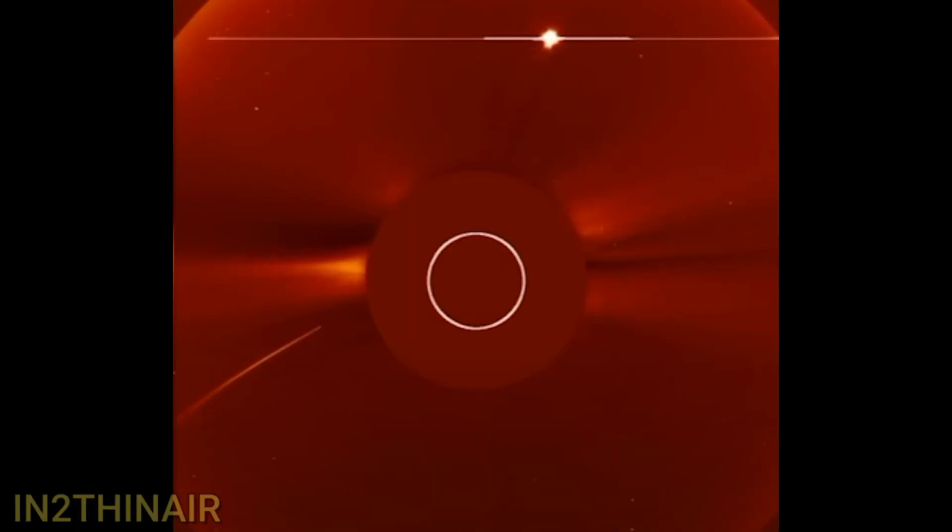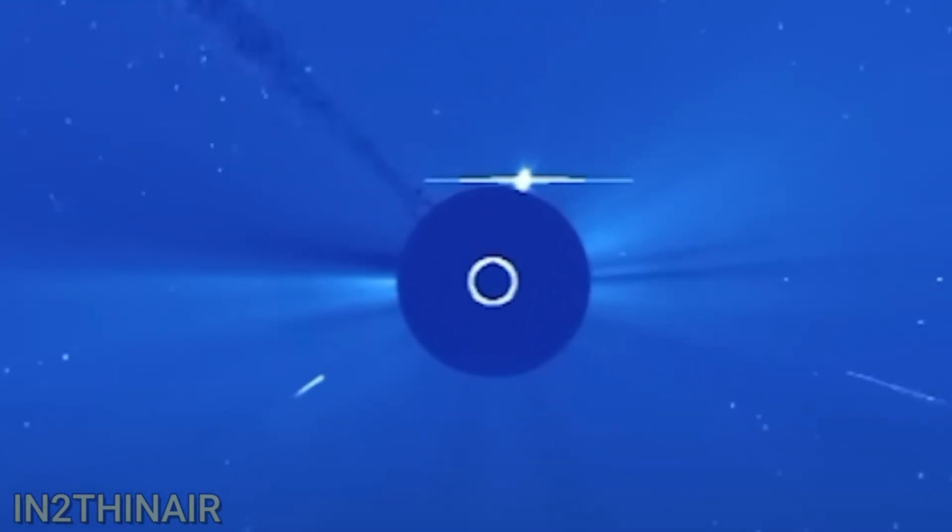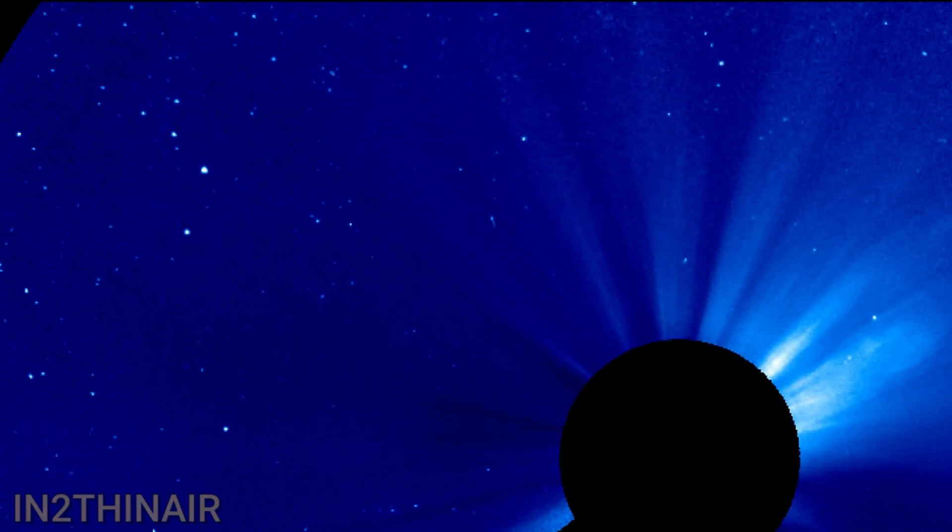Now many of us have seen sun-diving comets that go towards the sun, but they always wrap around the sun and either get destroyed in the process by the sun's heat, and in rare occasions can make it out the other side.